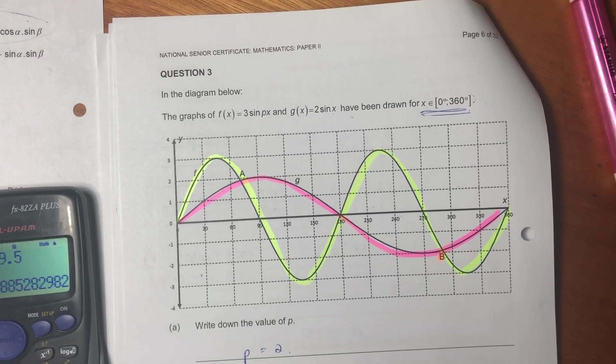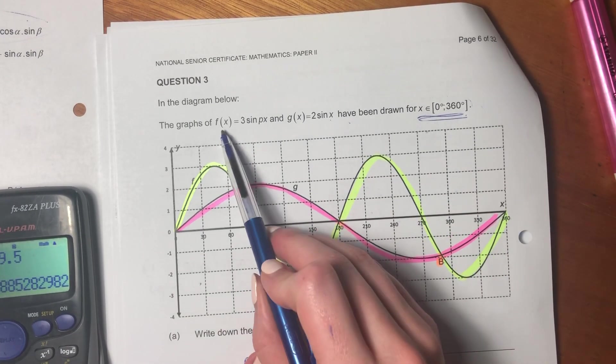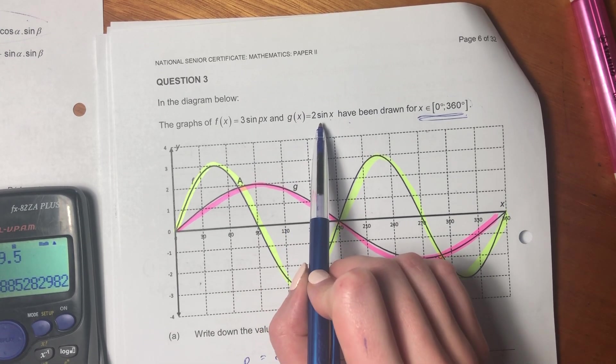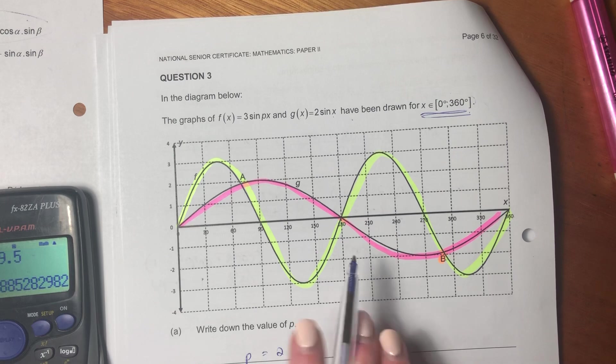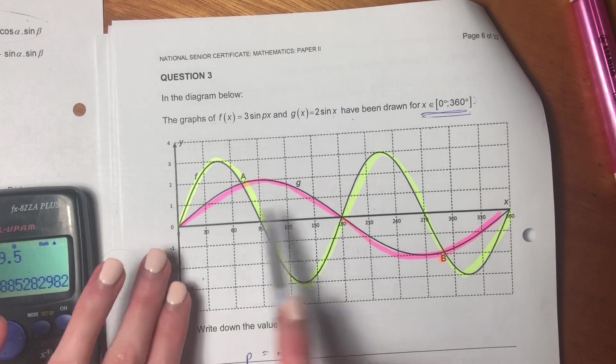Hey everyone, so we're looking at question 3 now, which shows two trig graphs. Specifically, f, which is 3 sine px, and g, which is 2 sine x. So it basically shows us two sine graphs on this page between the angles of 0 and 360.